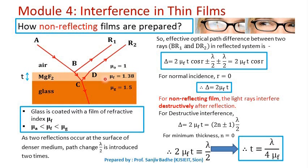The thickness of the film is chosen such that the optical path difference between ray R1 and ray R2 — reflected from the upper surface and lower surface of the film — is λ/2, that is, an odd integral multiple of λ/2. The condition for minimum intensity is satisfied when these two rays interfere with each other.